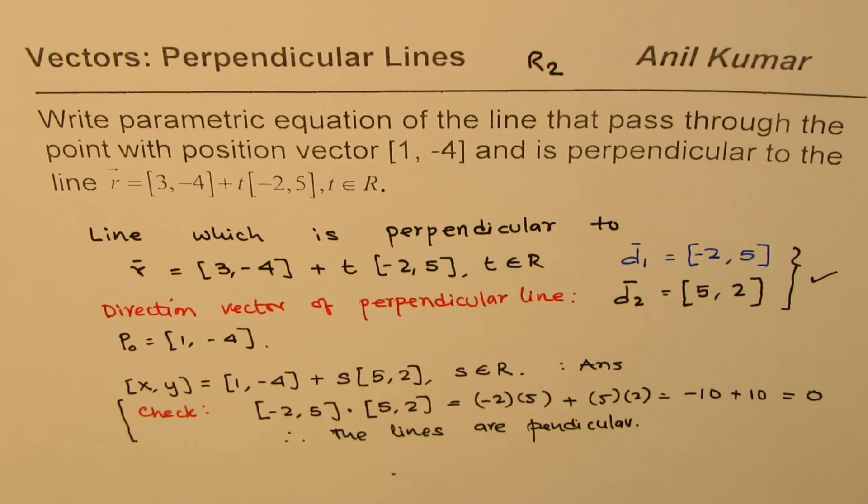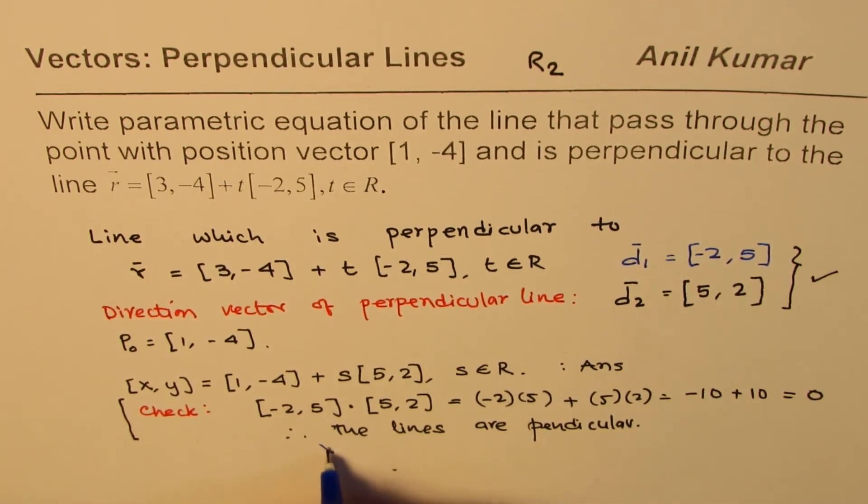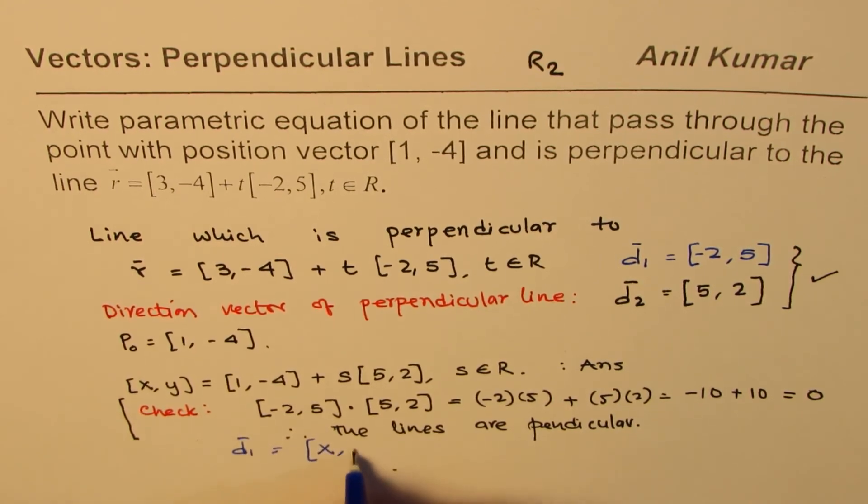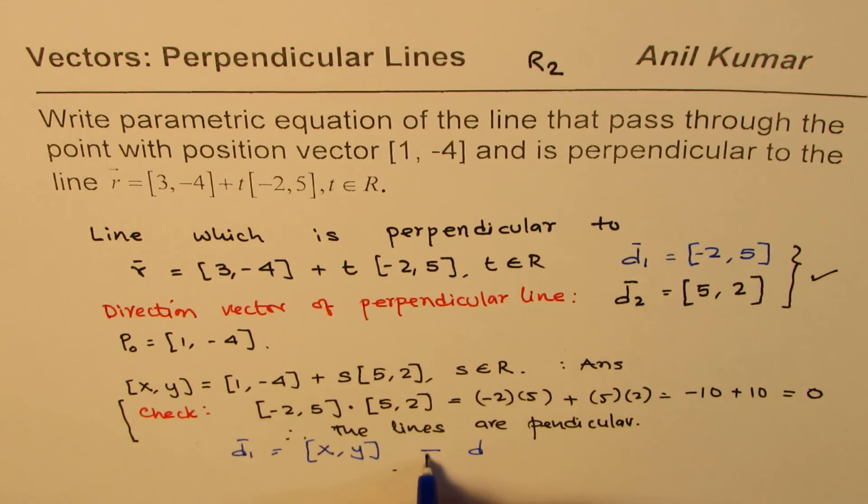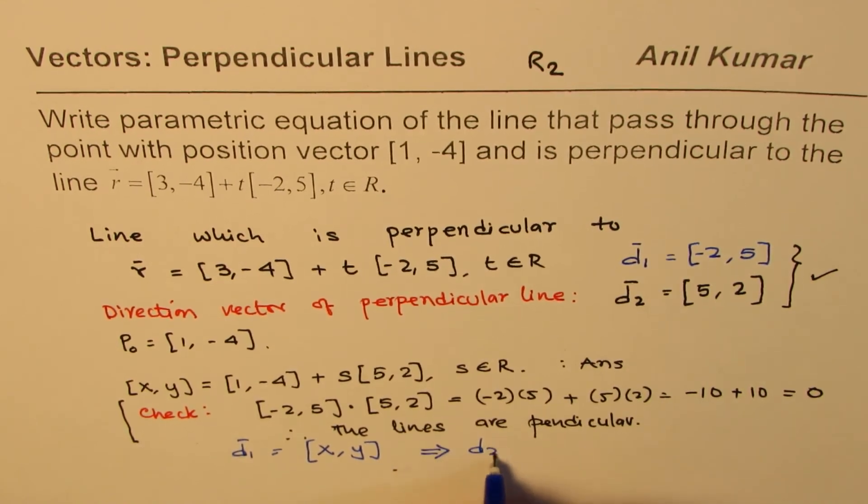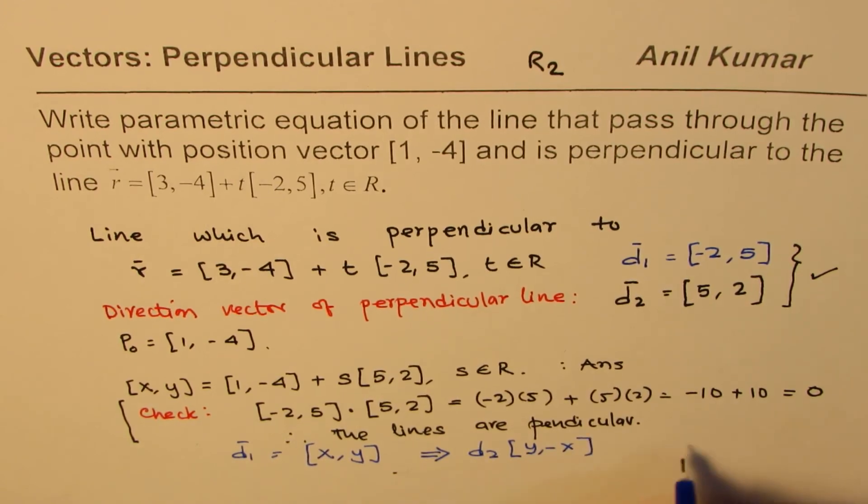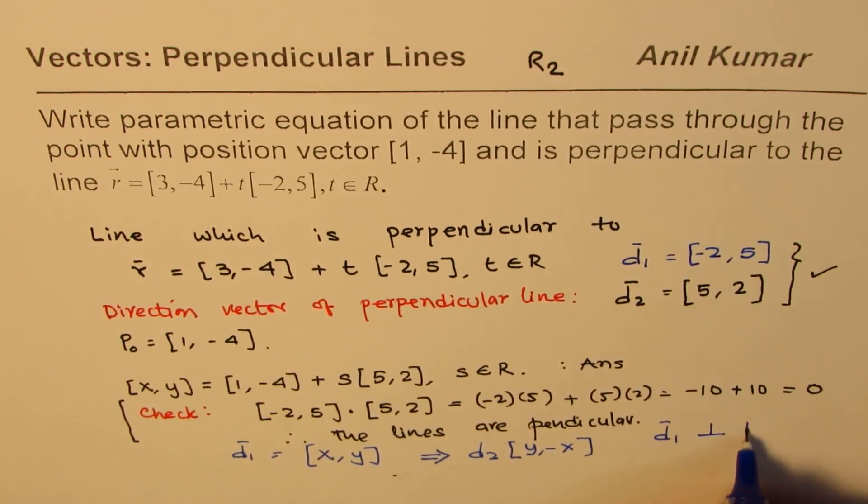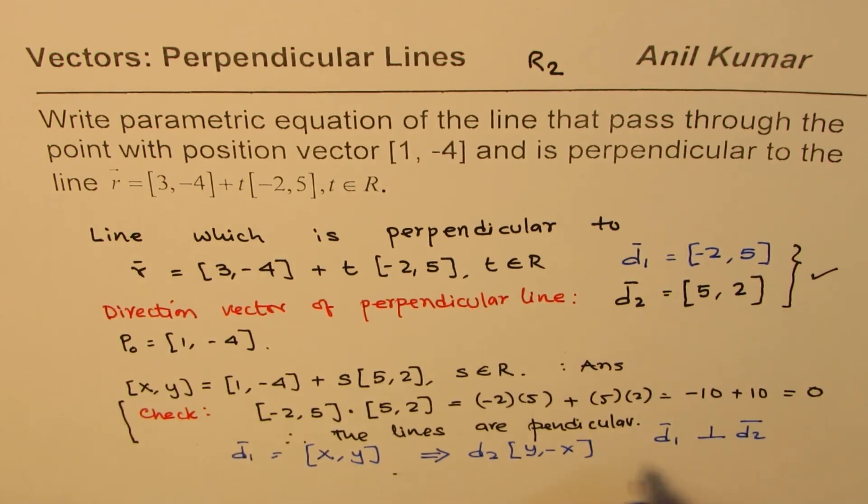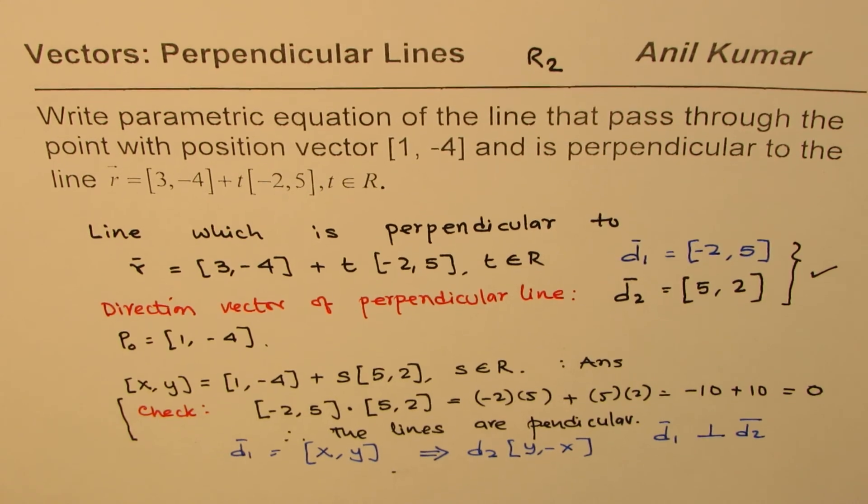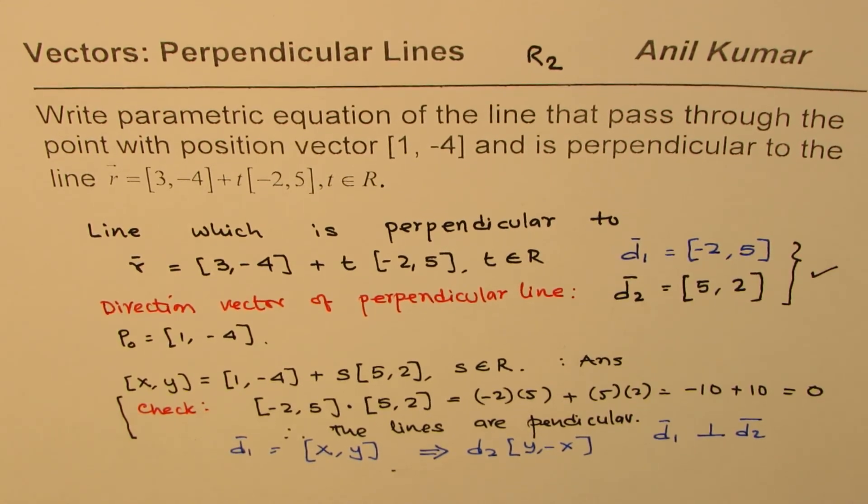So if you want to find direction vector of a perpendicular line, then in general, what you can do is, if I have d1 as (x, y), in that case, d2, which is perpendicular, could be written as (y, -x). So in that case, we will say d1 is perpendicular to d2. So you could always use this formula or method to find direction vector for a perpendicular line.